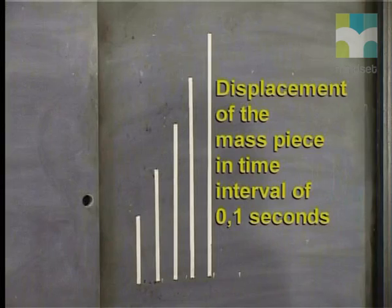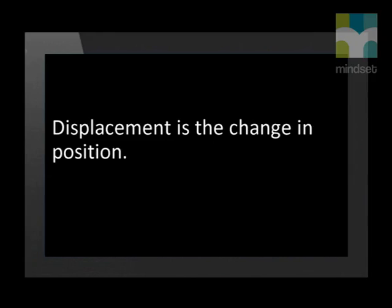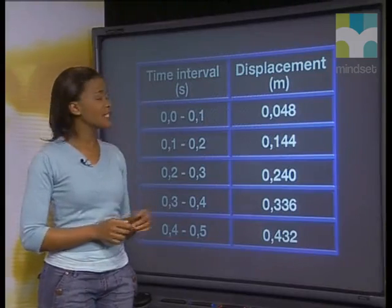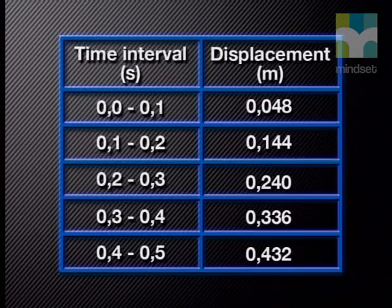I really enjoyed our trip to the lab, and now we can analyze the data we collected together. Let's get started by having a closer look at this graph the learners put together. Each segment of the tape represents the displacement of the mass piece in a time interval of 0.1 seconds. The displacements for each of the time intervals are clearly different — there is an increase in displacement for each 0.1-second time interval.